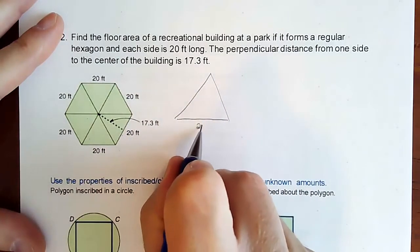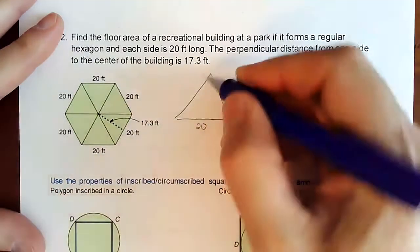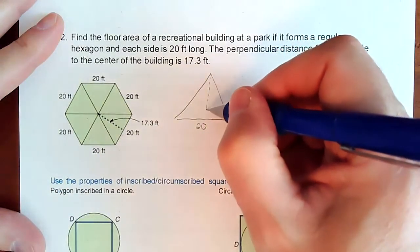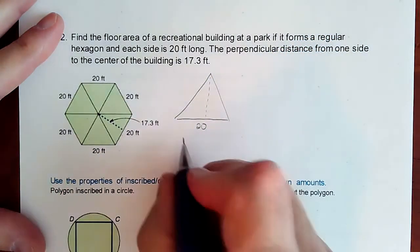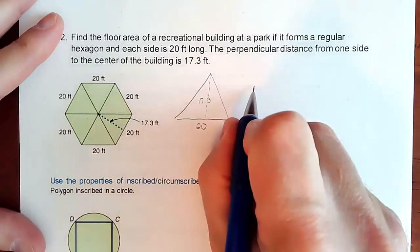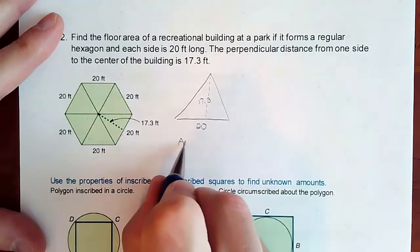The base is 20 and they wonderfully give us this distance right there, which is the height, and that height is 17.3. So really we just want to find the area of that one shape.